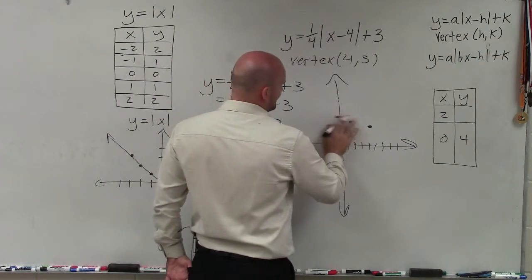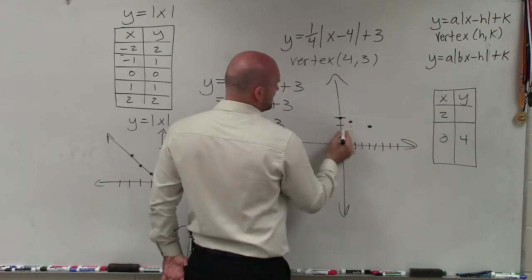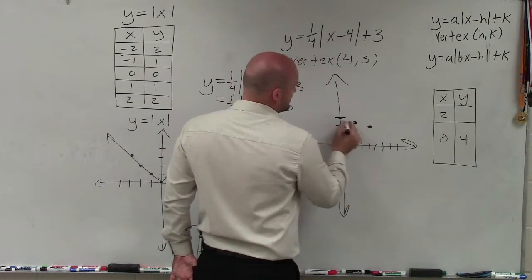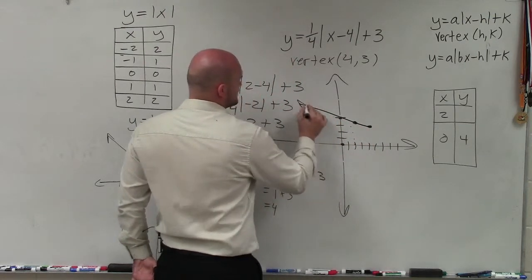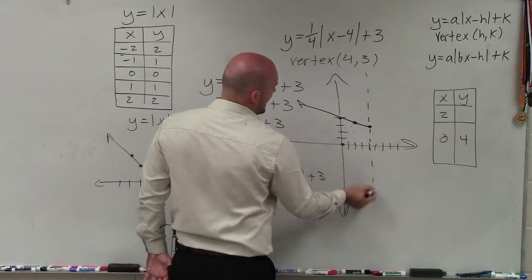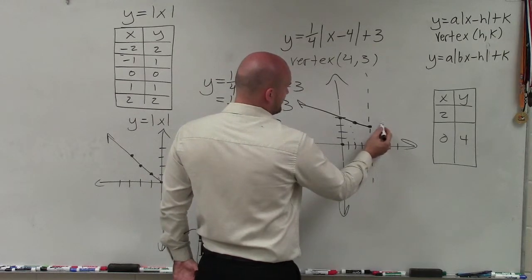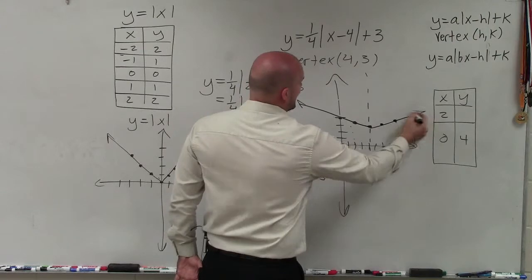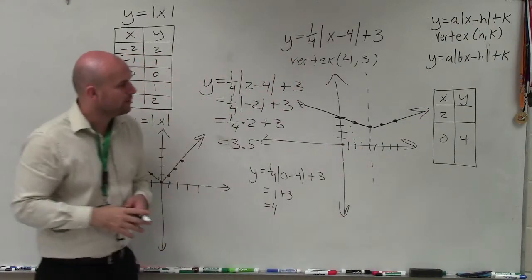So you can see this is one side of my absolute value. Remember, there's an axis of symmetry. So I'll go over two units, go up 3.5, and go over two more, and then go up to 4. And now I have the rest of my absolute value equation.